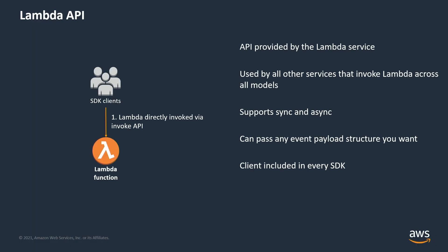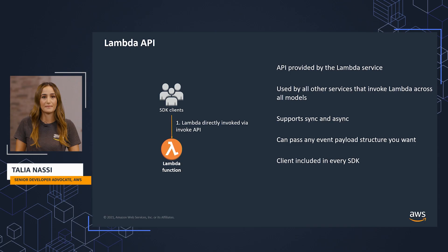Invocation models include synchronous, asynchronous, or stream-based, which we'll talk about next. You can pass any event payload structure to the Lambda API, depending on the needs of your application. For very large payloads, you can store these in S3 and pass a reference to the S3 object instead. Every SDK includes the Lambda client, making it easy to interact with the Lambda service from your code.